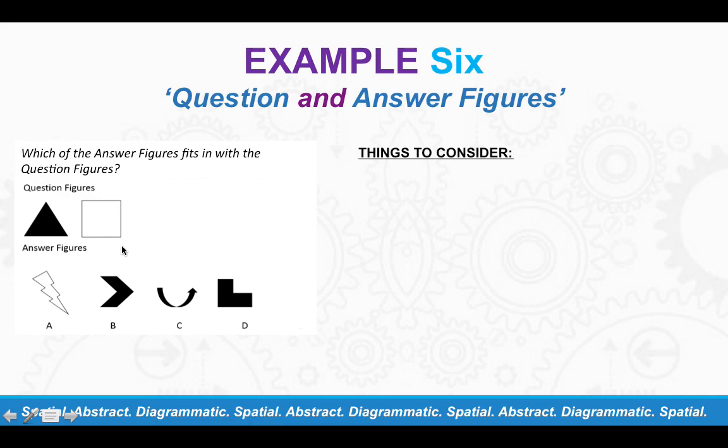So things to consider for these types of questions. So the shape must contain one or more line of symmetry. So as you can see, the question figures here, the only thing that could be joining them in some way is reflections. You can create symmetrical lines for each of these shapes. So answer A can be ruled out because you can't create a symmetrical line through the shape. Answer B could be plausible. So let's make sure that it is so by checking the others.